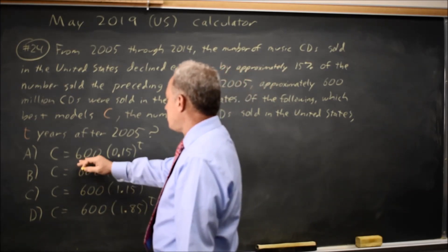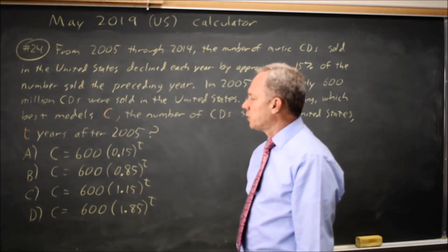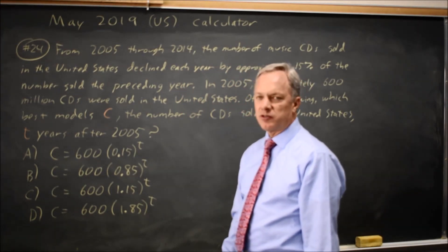In choice A, at T equals zero, we get 600. At T equals one, we only get 15% of 600.